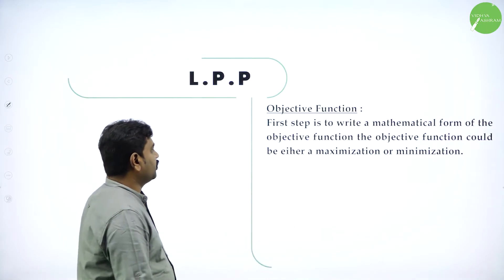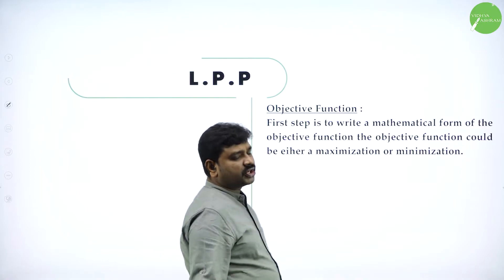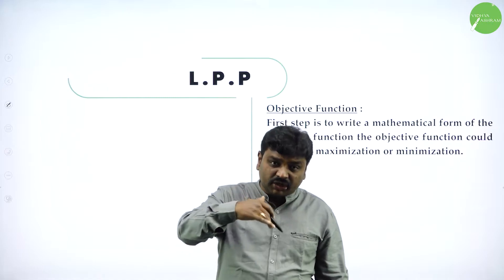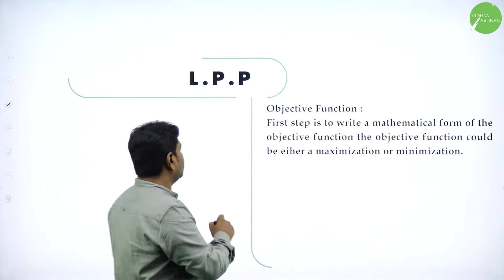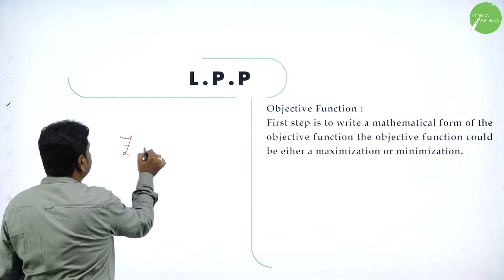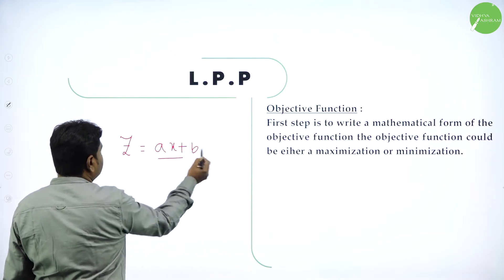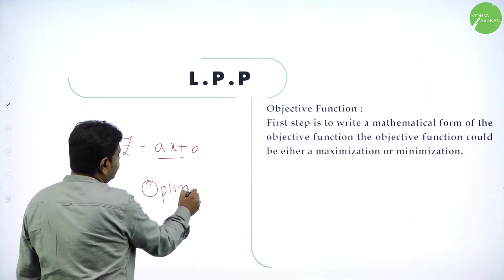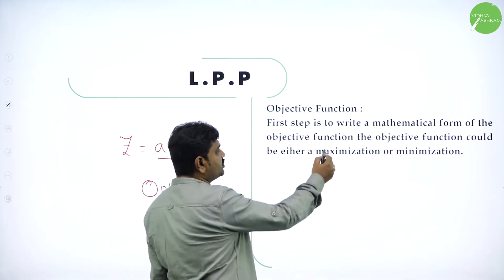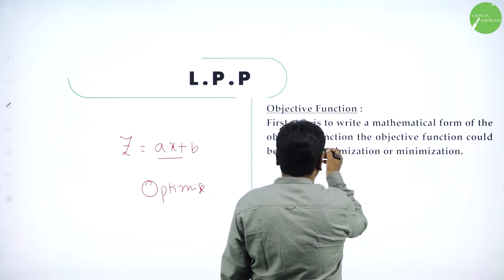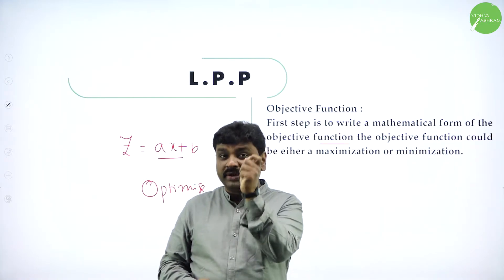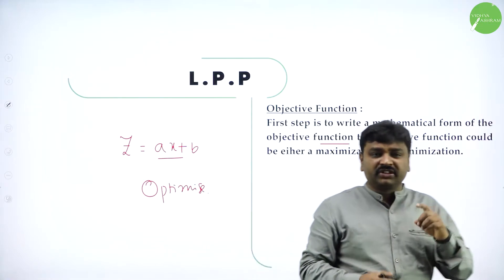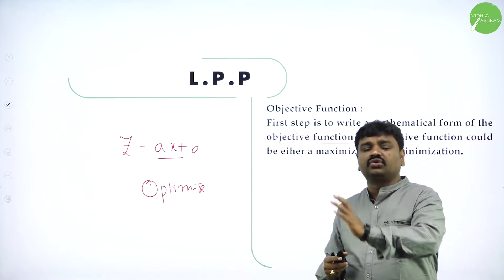Now, how to solve any problem? First we should know what the objective function is. A function which we need to maximize or minimize — a function which we need to optimize — is called the objective function. Generally it will be in the form Z = AX + BY, a linear function which we need to optimize. First step: write the mathematical form of the objective function.